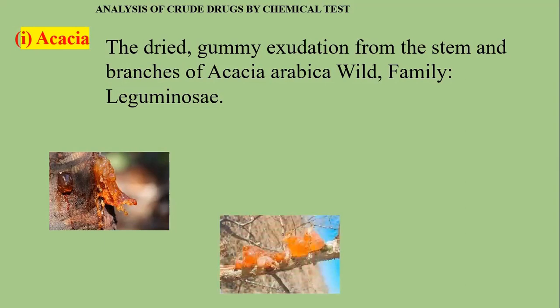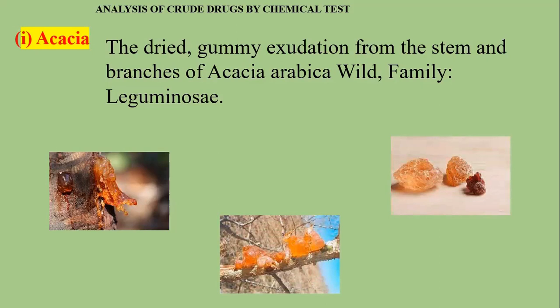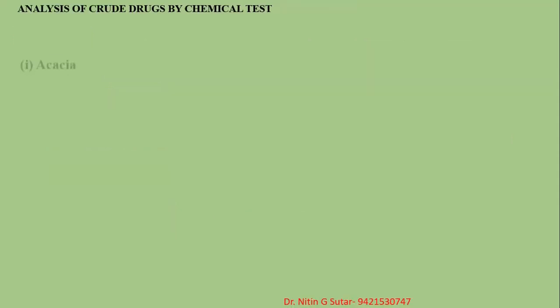These are the tears that are observed after drying, which are then isolated. These tears are your acacia. We call it Indian gum also, which is used for making laddoo, mostly in the winter season. It is also used as a binding agent. Let's see how the analysis by chemical test is performed.